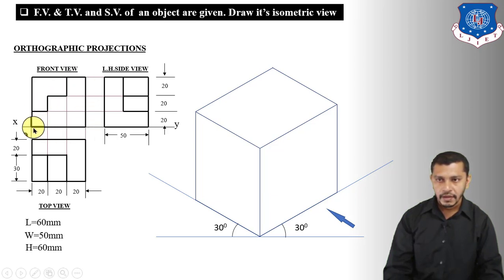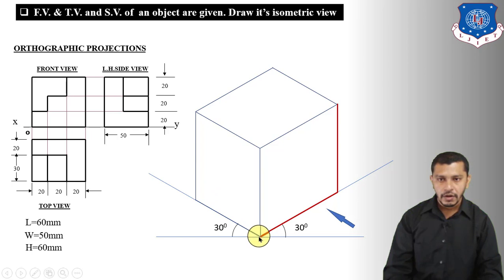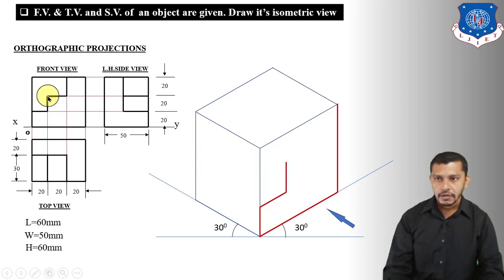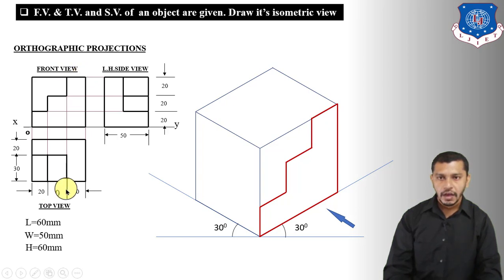To draw the first part, start with a line at 60mm. Then draw the steps: go upwards 20mm parallel to the vertical edge, then 20mm to the right parallel to the base, then upwards 20mm again, then another 20mm to the right, and again upwards 20mm parallel to this edge. Connect these points to get the staircase profile of this part.